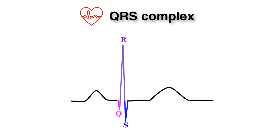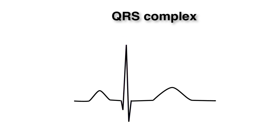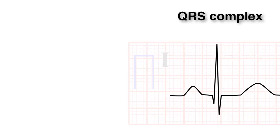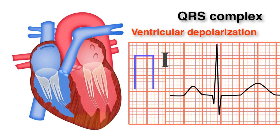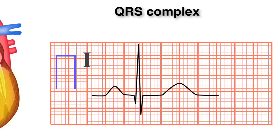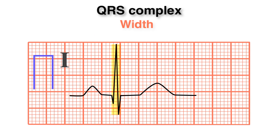Now it's time to look at the normal QRS complex. As previously mentioned, the QRS interval represents ventricular depolarization. Its normal width is less than or equal to 100 ms, or less than 2.5 boxes.